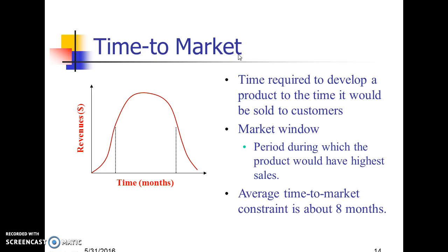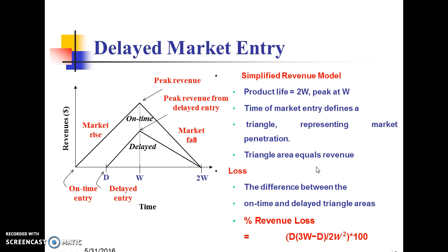Time to Market is the major design metric — the time required to develop a product to when it can be sold to customers within the market window. The Revenue Model diagram shows two triangles: the first triangle represents on-time market entry, and the second triangle represents delayed entry.